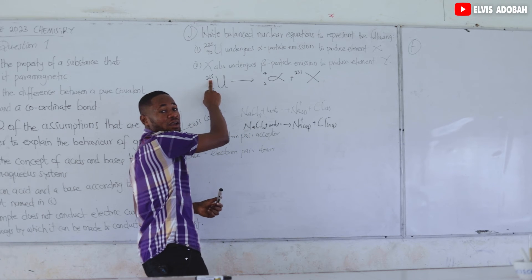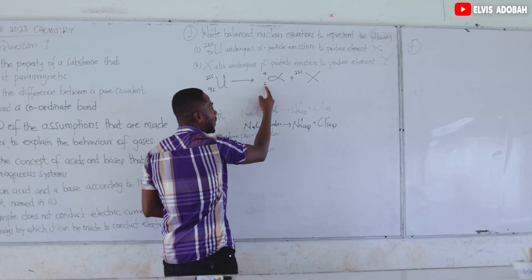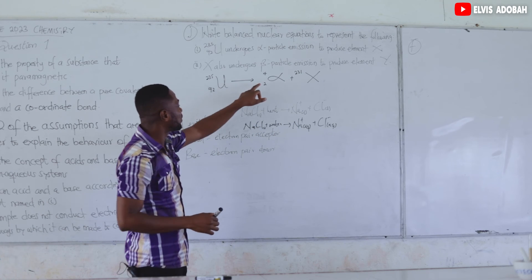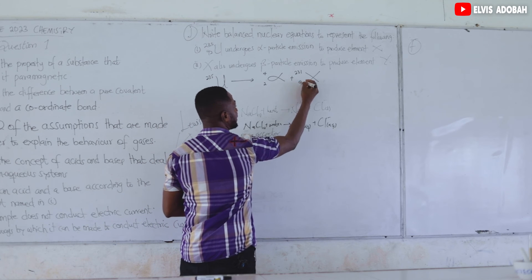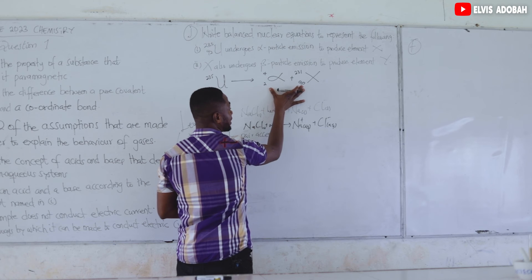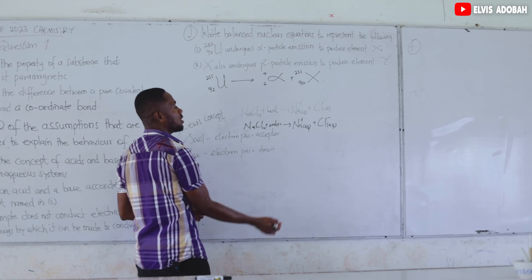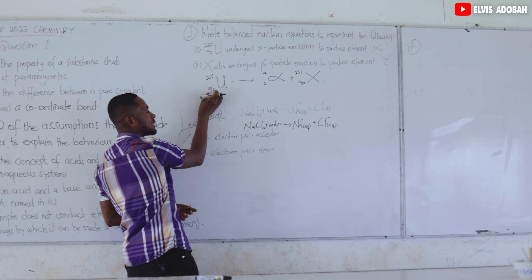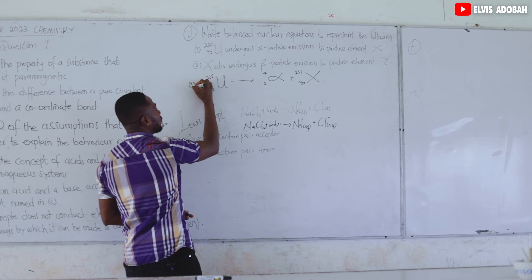The mass numbers are now balanced: 4 + 231 = 235, matching the reactant side. We also balance the atomic numbers: the reactant side is 92, the alpha particle contributes 2, so element X must have atomic number 90, since 90 + 2 = 92. That completes part one of the nuclear equation.